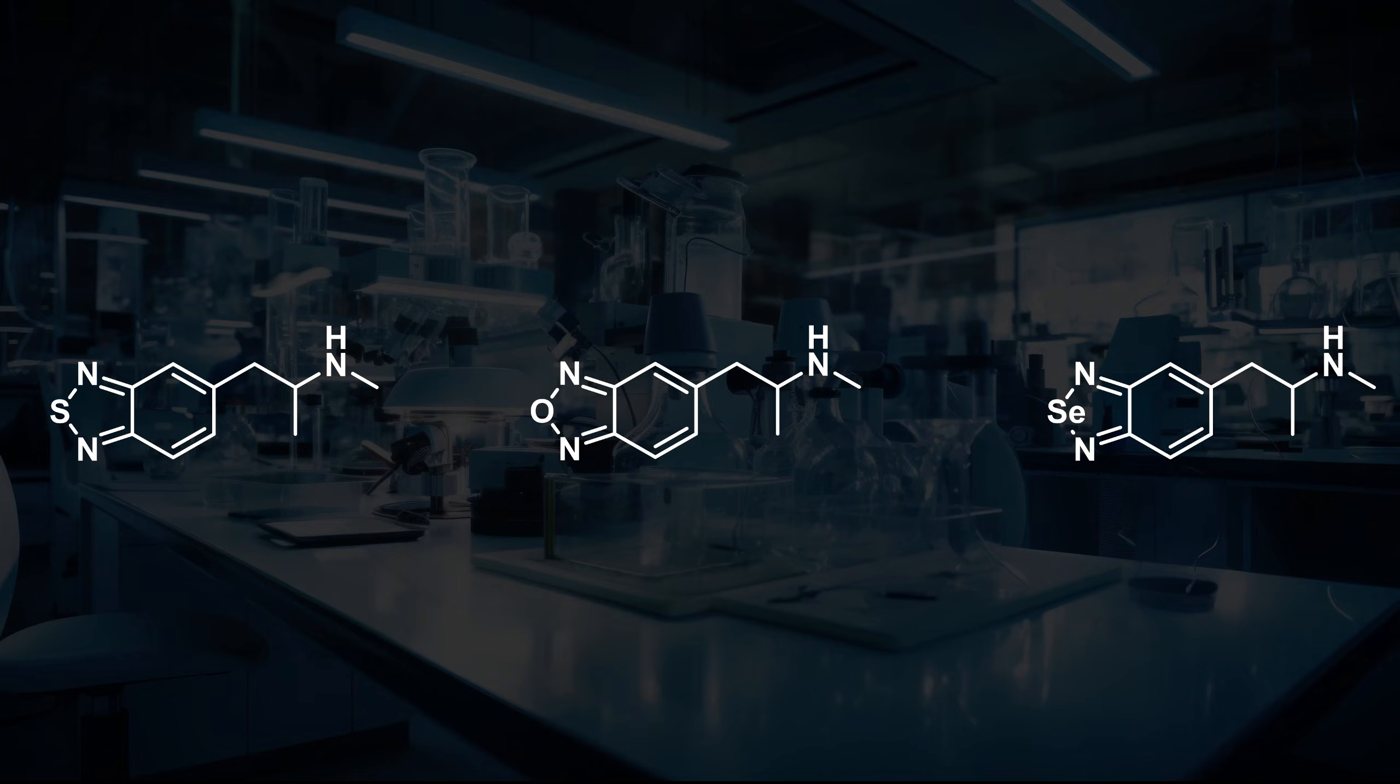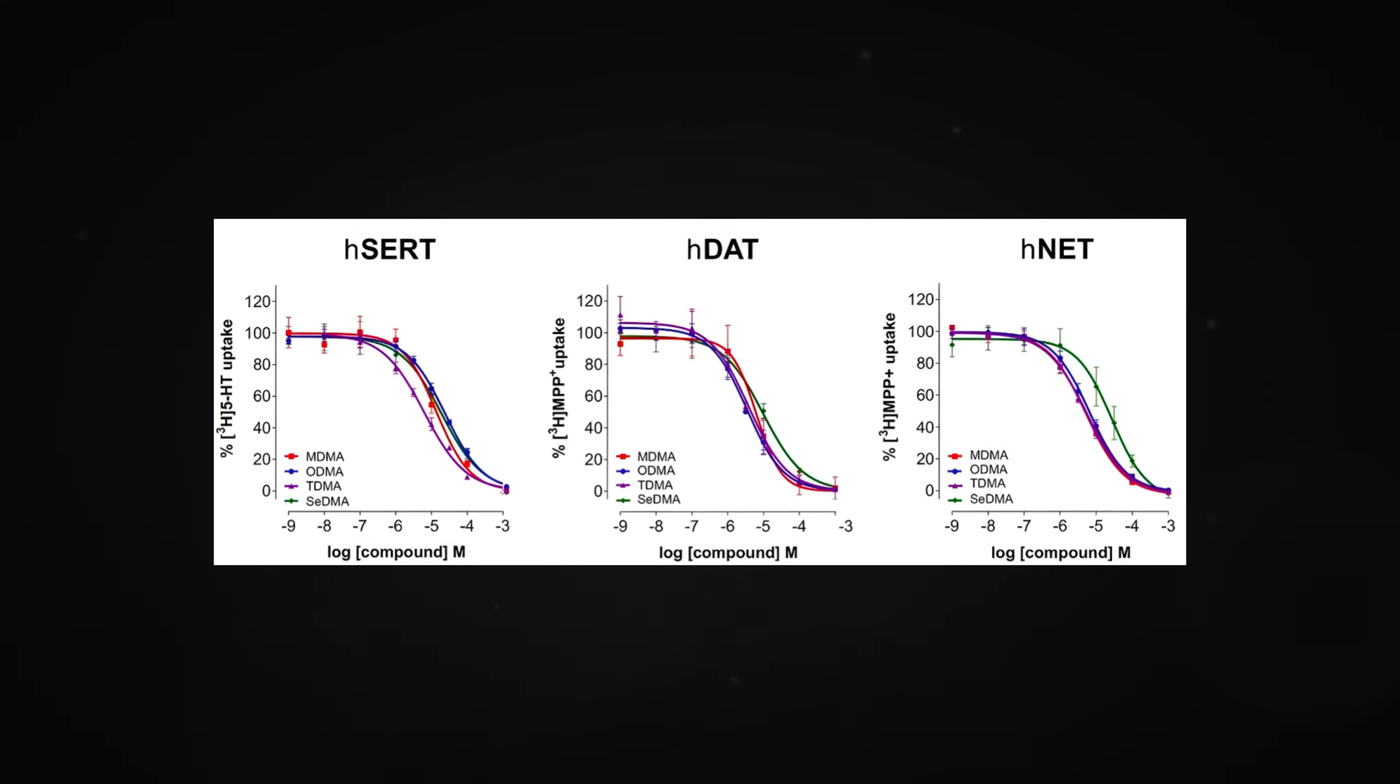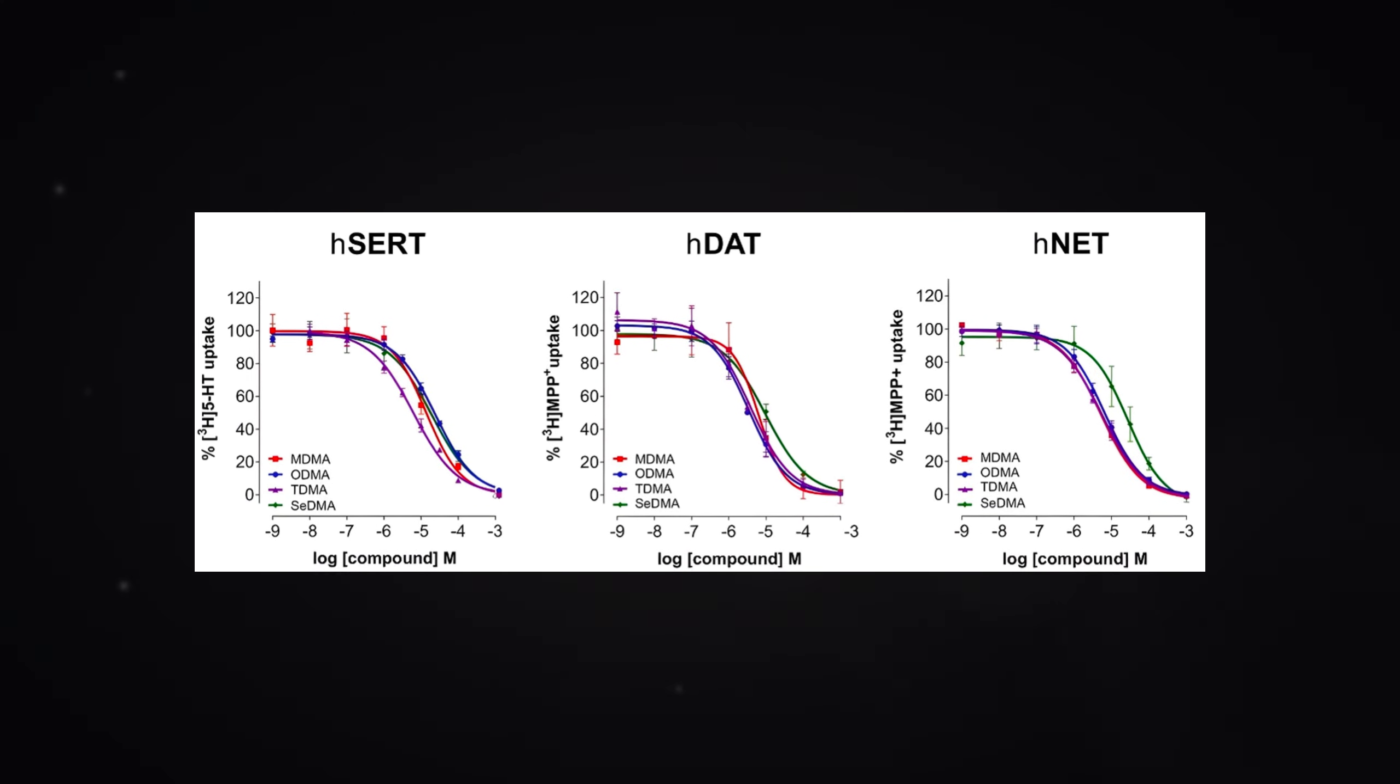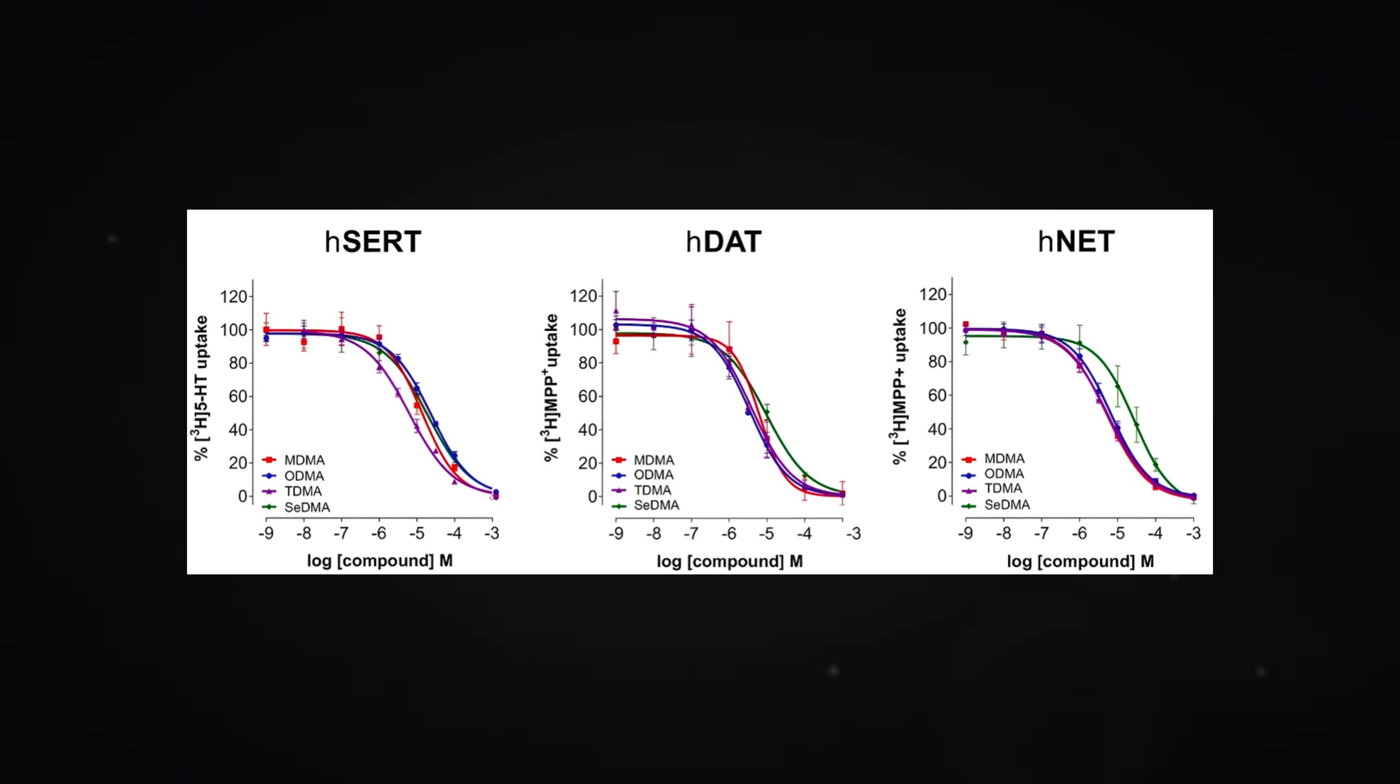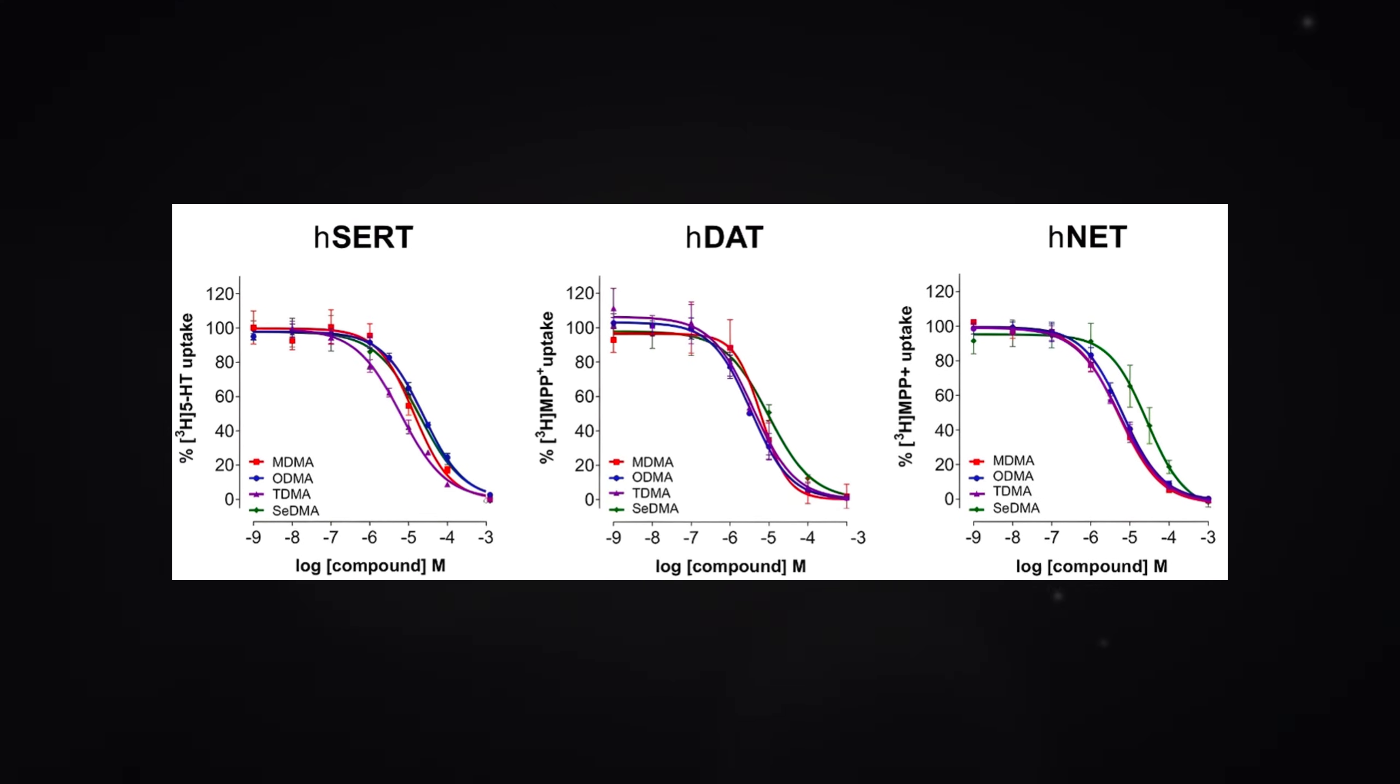These new analogues were tested in cells expressing these transporters to compare their activity to MDMA. These tests showed that MDMA and these analogues were all low-micromolar inhibitors of each transporter, showing that these changes retain activity at these key receptors. Further tests were used to show that these analogues also stimulate the release of these neurotransmitters.